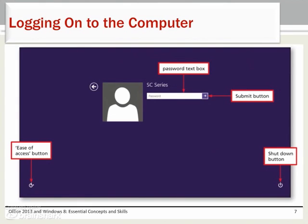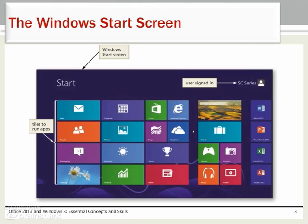To log on to your computer, swipe up on the lock screen to display a sign-in screen. Tap or click the user icon on the sign-in screen. If necessary, enter the user account password in the password text box. After logging into your computer, you are taken to the Windows Start screen with quick access tiles to frequently used programs. From here, you can access your desktop or any other program by touching the tile with your finger or clicking the tile with the mouse.